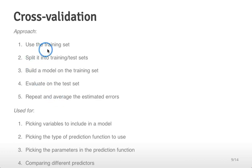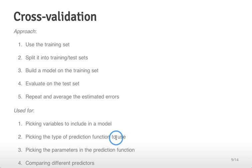This cross-validation approach takes the training set, breaks it up into a sub training and test set, and repeats the procedure just like we will when building our model on the actual training set and applying it to the actual test set. This is used for picking which variables to include in a model — feature selection — picking the type of prediction function to use, or picking the parameters in the prediction function. In general, the idea is to compare a bunch of different predictors and get an estimate of the error rate they would have on an independent data set.